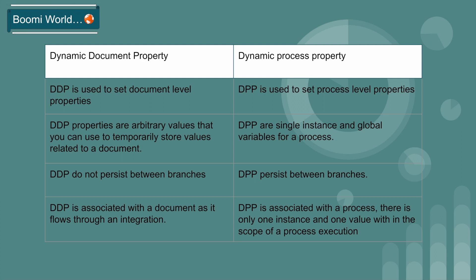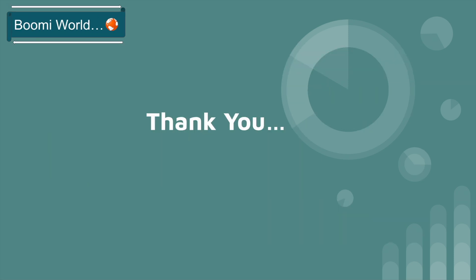Suppose you have multiple documents processing at the same time — you would get the same value, specifically the last value, because it is a single global variable. This means if you are processing a hundred records at a time, you will get only the last record's value. These are the main differences between dynamic document property and dynamic process property.